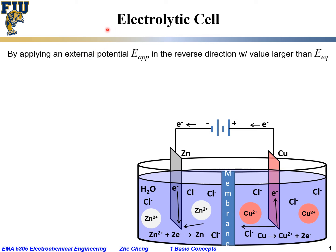Different from a galvanic cell, let's look at an electrolytic cell. We are still based on the electrochemical cell that contains zinc metal and copper metal inserted into an electrolyte solution containing zinc chloride and copper chloride, with a membrane separating the two chambers. But now, different from a galvanic cell, we are applying an external potential through an external power supply in the reverse direction, with a value greater than the equilibrium cell potential.